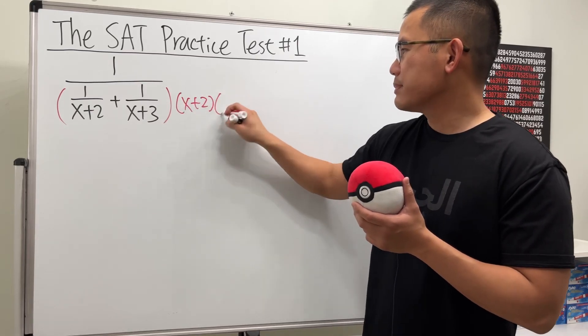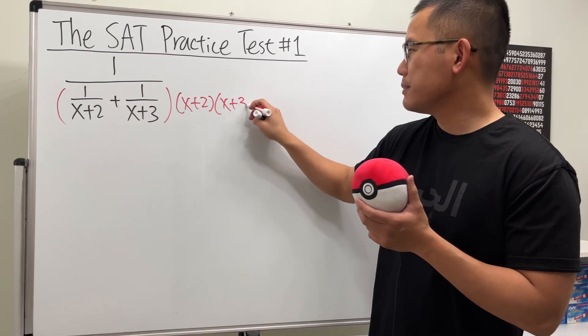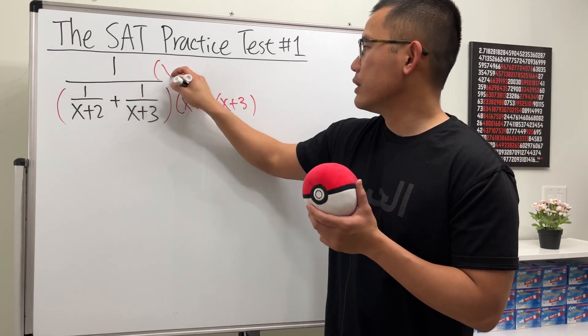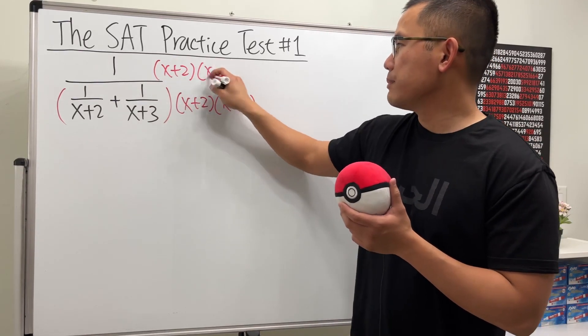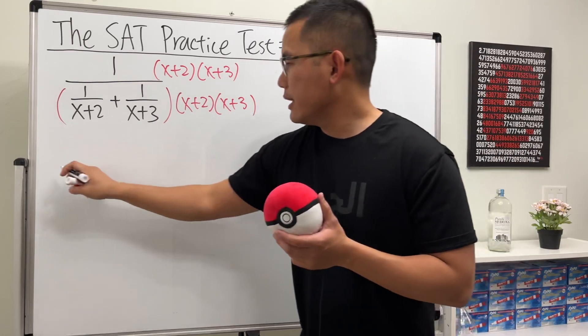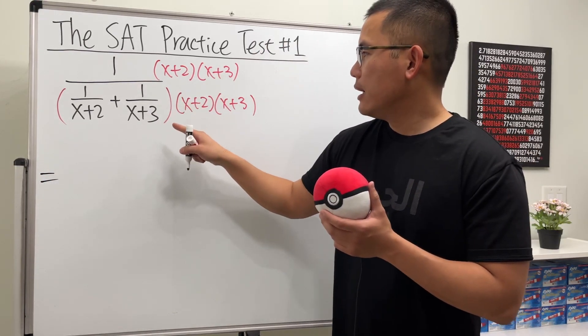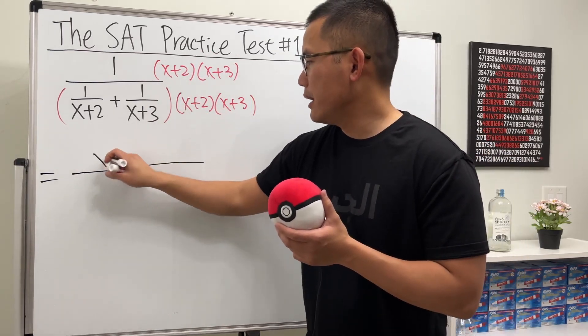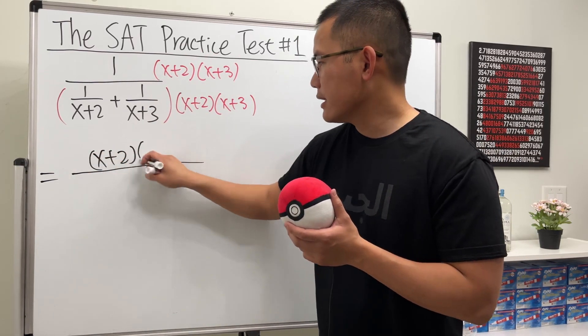So go ahead and proceed: x+2 and also x+3. Multiply that on the bottom and also do the same on the top, so x+2 here and then x+3. On the top, let's just keep it as x+2 times x+3.